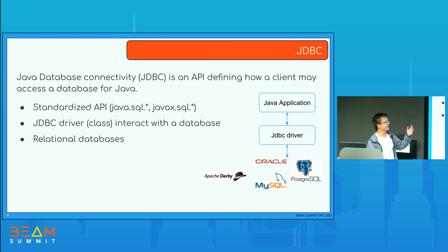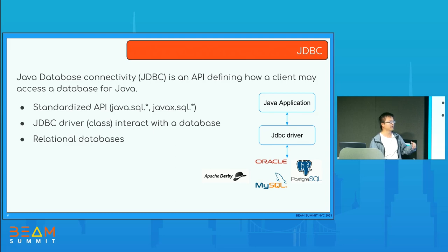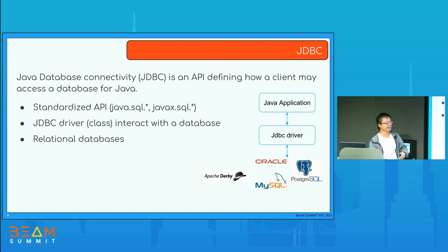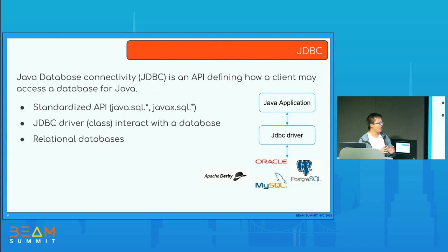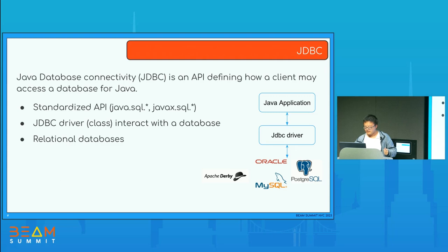Because JDBC is standardized, we can use a single API, a single interface to connect with different SQL or traditional relational databases — like PostgreSQL and others. They all use the common API called JDBC, Java Database Connectivity, to connect with a Java application. In terms of Beam, the application is just a Beam pipeline for both read and write.